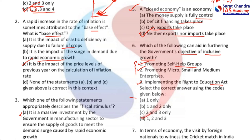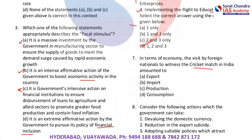Next question: in terms of the economy, the visit by foreign nationals to witness a cricket match in India amounts to what? Someone from abroad is coming to India and watching a cricket match. That foreign national has to bring foreign exchange and spend it in India on tickets and accommodation. A person from outside is paying to avail services in India, so that amounts to export of services.